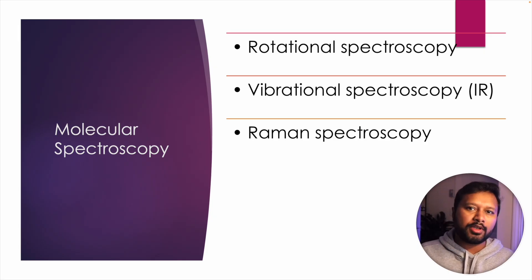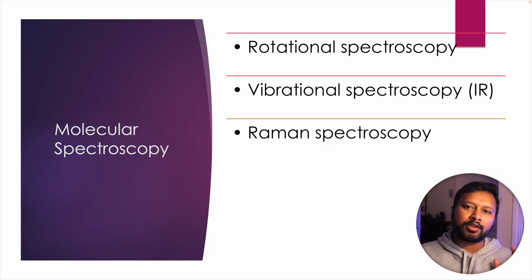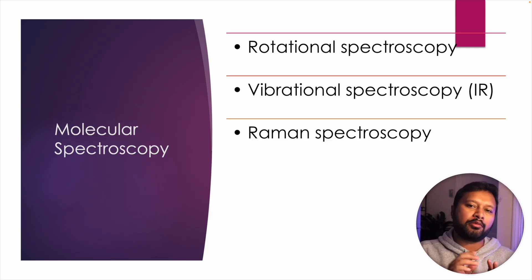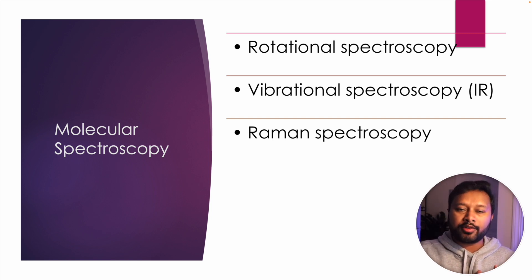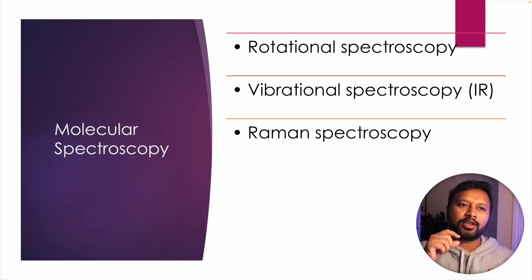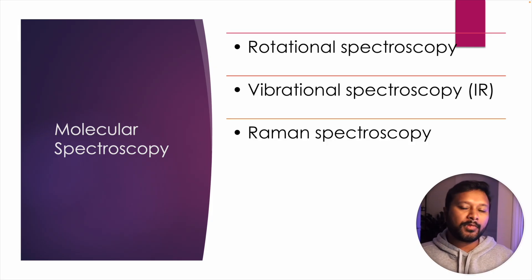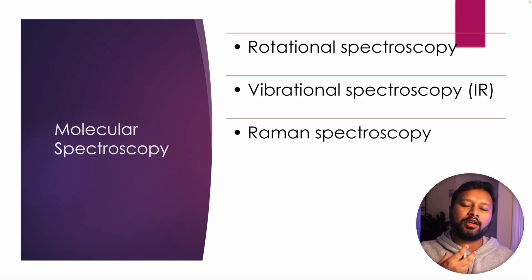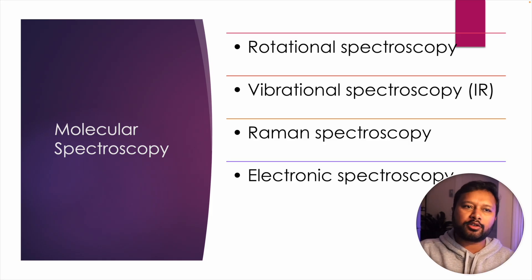The next thing is Raman spectroscopy — one of the most important parts of molecular spectroscopy. You should know how to find out the Stokes line, anti-Stokes line, and the distance between them when the Rayleigh line is given; the distance between two Stokes lines; the distance from the Rayleigh line to the Stokes line; and how to find out the values of the anti-Stokes line given the Rayleigh line value. You should also know the intensity of the Stokes and anti-Stokes lines, and Raman spectroscopy for diatomic molecules.